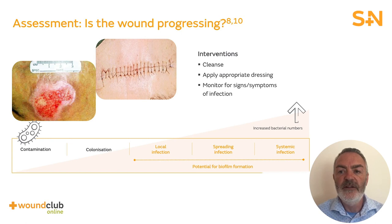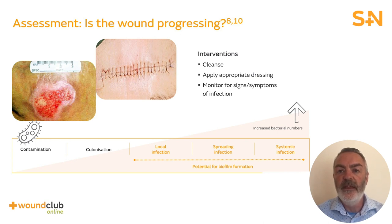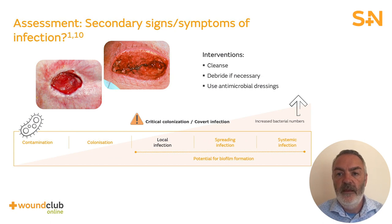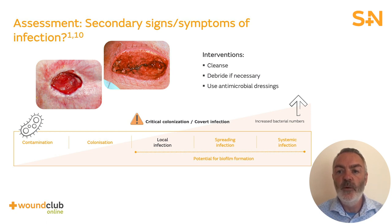When assessing for infection, first ask yourself: is this wound progressing as you would expect? If so, the wound is probably contaminated or has low colonisation levels of microbes. Treatment in this case would include cleansing the wound, applying an appropriate dressing based upon exudate levels, and monitoring continually for signs of infection. If the wound presents with secondary signs of infection, it may have a localised infection — formerly known as critical colonisation. The bacteria have overcome the host's ability to fight off the infection. For wounds with a localised infection, it is important to cleanse, debride if necessary, and apply an antimicrobial dressing.